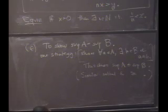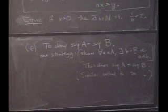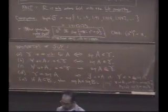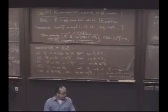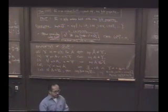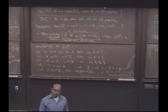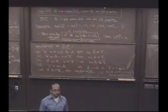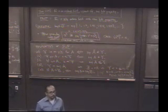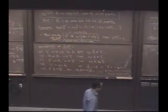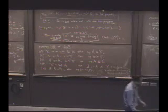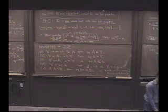We've talked about the least upper bound property and how it distinguishes the reals. Next time, we're going to start talking about the complex number field. See you next time.